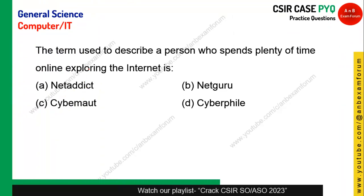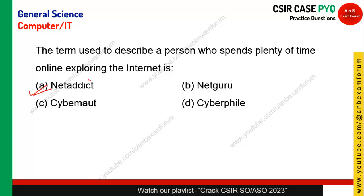The term used to describe a person who spends plenty of time exploring the internet — nowadays that's all of us. Such a person is called a net addict. Option A is the correct answer. Whereas someone who loves computers is known as a cyber phile. Option A is correct.